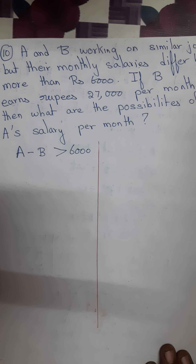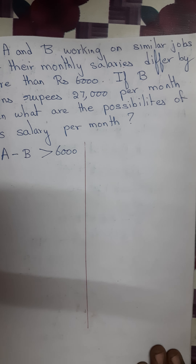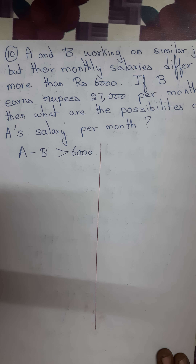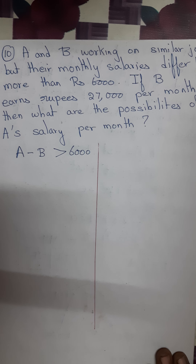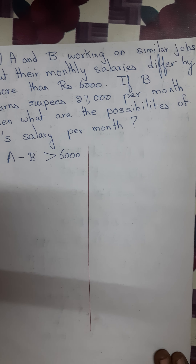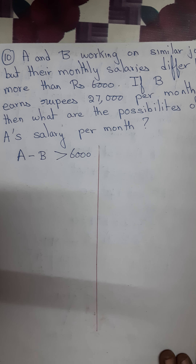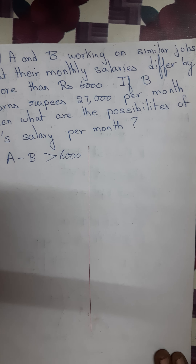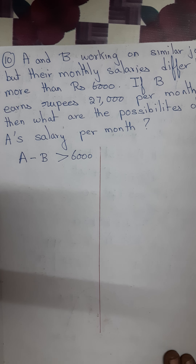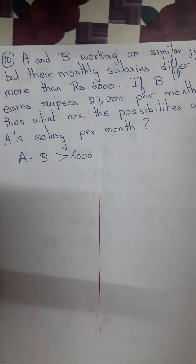Exercise 2.3, Question No. 10. A and B are working on similar jobs, but their monthly salary differs by more than Rs. 6,000. If B earns Rs. 27,000 per month, then what are the possibilities of A's salary per month?